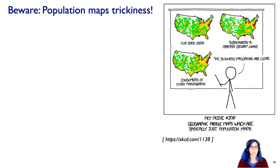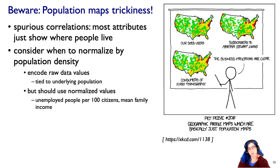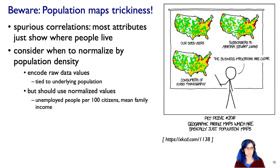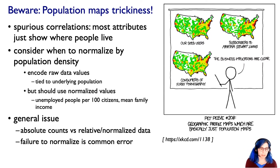One thing to be aware of is that spurious correlations are an issue. The XKCD cartoon shows the same pattern across three different maps — but this doesn't mean something about Martha Stewart subscribers. It's a spurious correlation because what we're seeing is where people live. This is the thing about population maps: think about when you need to normalize by population density. If you just encode raw data values, that's typically tied to where people live. You often want normalized values, like unemployed people per 100 citizens or mean family income. This general issue of failure to normalize comes up all over visualization, but it particularly hits hard with choropleth maps.